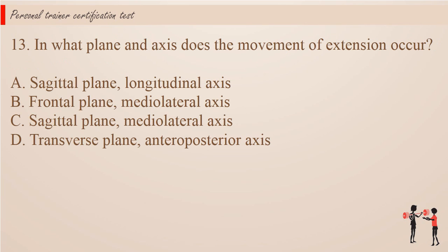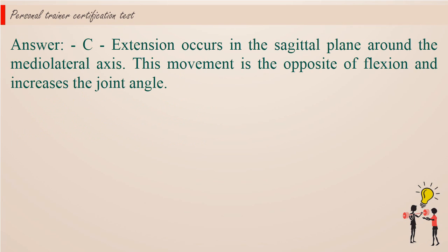Question 13. In what plane and axis does the movement of extension occur? a. Sagittal plane, longitudinal axis. b. Frontal plane, medial lateral axis. c. Sagittal plane, medial lateral axis. d. Transverse plane, anteroposterior axis. Answer: c. Extension occurs in the sagittal plane, around the medial lateral axis. This movement is the opposite of flexion and increases the joint angle.